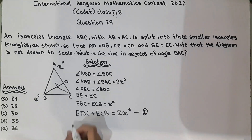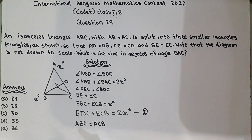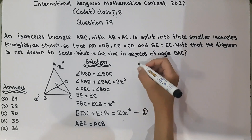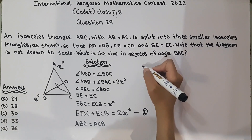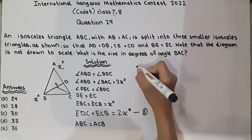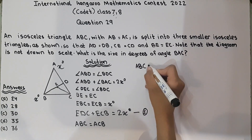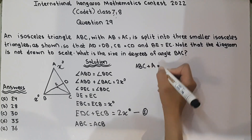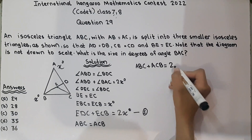Now for equation number 2: angle ABC equals angle ECB. We can set up that ABC plus ACB equals 2X degrees. This is equation number 2.